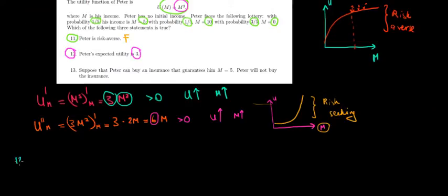So we're doing now question 12. The expected utility would equal to, with the probability of 1 over 5, we have in expectation 5 euros to the power of 3 worth of utility. So 5 to the power of 3 plus 1 over 5, again,